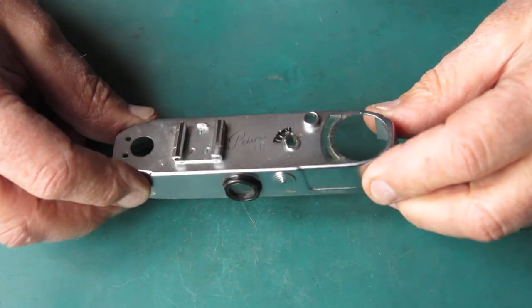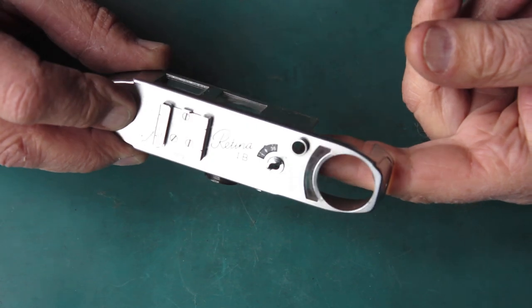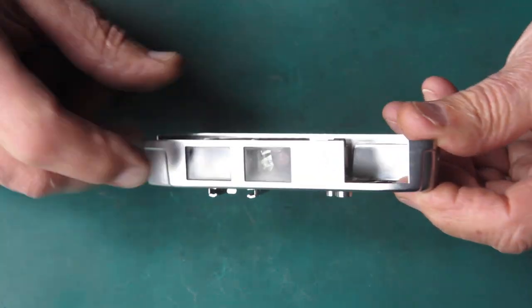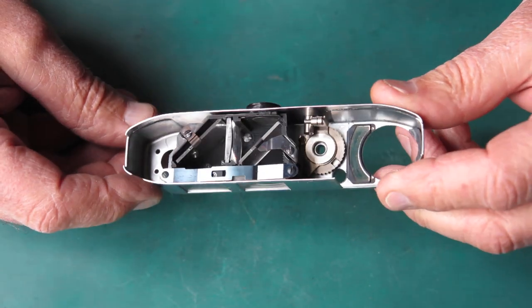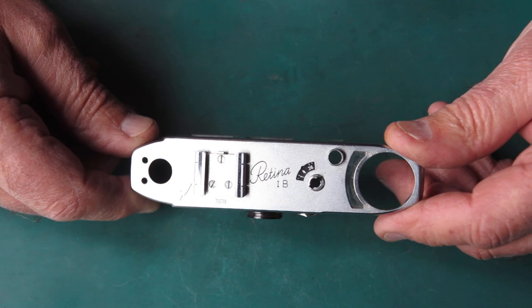Time to start cleaning up this top cover. As you can probably see, the meter window there is quite dusty. There's a fair bit of dust and dirt on this all over really, but no serious problems that I can see.